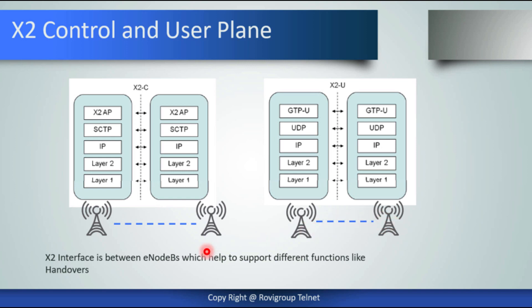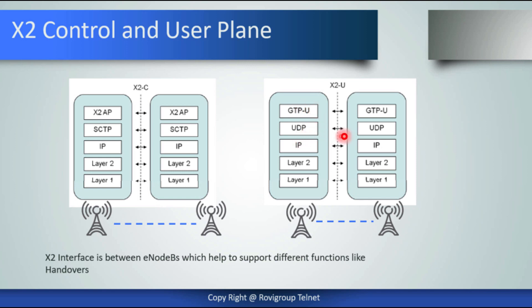The X2 interface between eNodeBs supports different functions like handover. In the control plane, the X2AP protocol is carried on the SCTP protocol, then over IP, layer 2, and layer 1. In the X2 user plane, the GPRS Tunneling Protocol is carried over UDP, then over IP, layer 2, and layer 1.